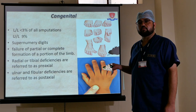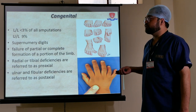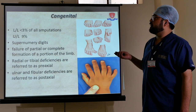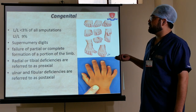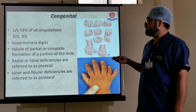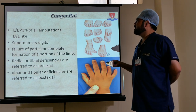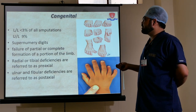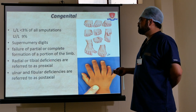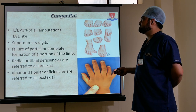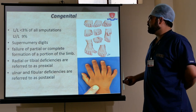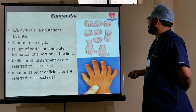Congenital indications: lower limb involvement is more than 3%, upper limb involvement is 9% of all amputations. These include supernumerary digits and failure of partial or complete formation of a portion of the limb. Radial or tibial deficiencies are referred to as pre-axial, while ulnar and fibular deficiencies are referred to as post-axial.